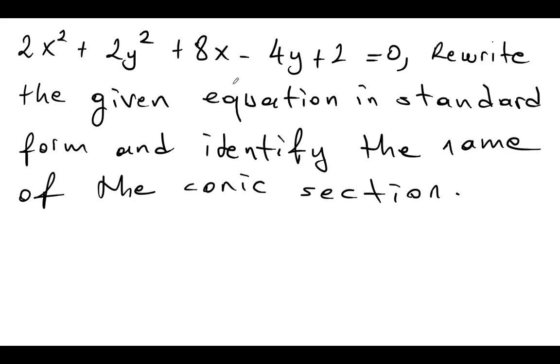2x squared plus 2y squared plus 8x minus 4y plus 2 is equal to 0. Rewrite the given equation in standard form and identify the name of the conic section.